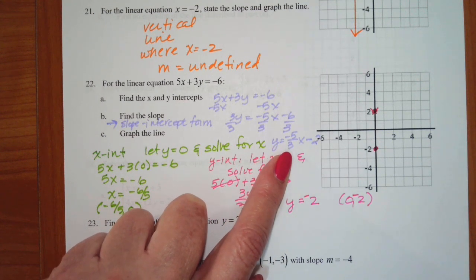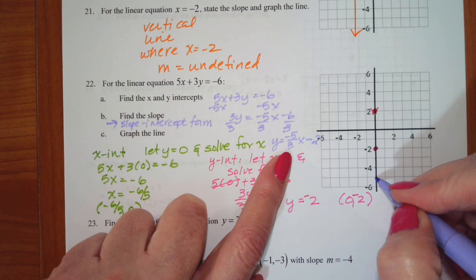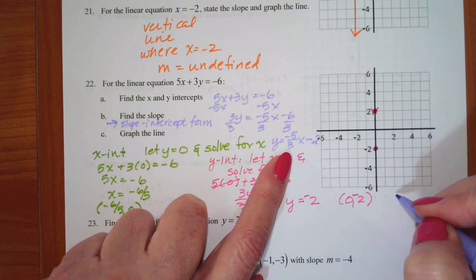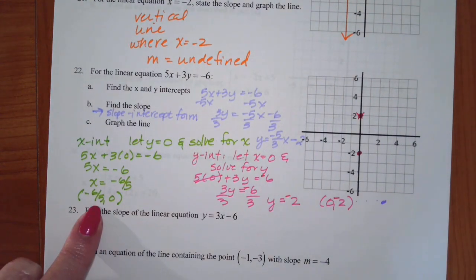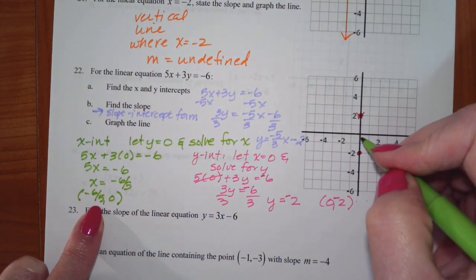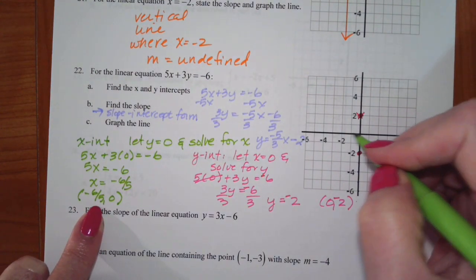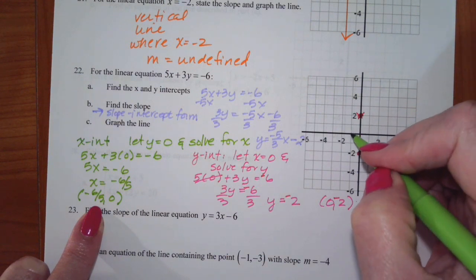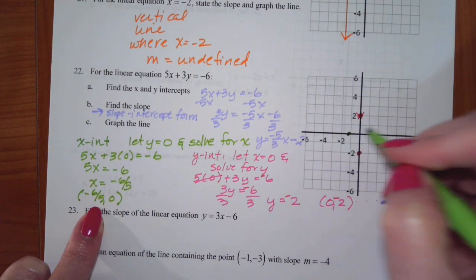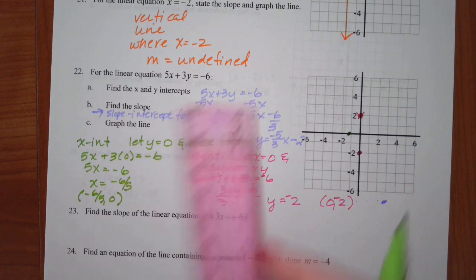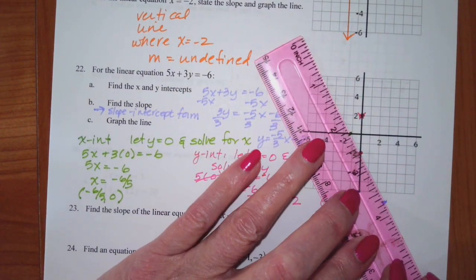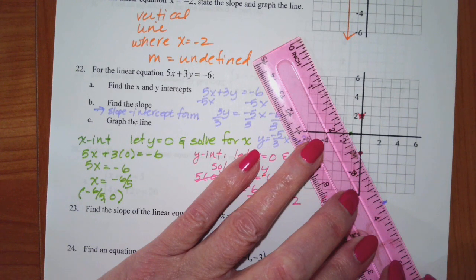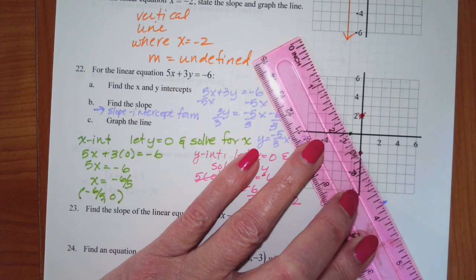So I go down 1, 2, 3, 4, 5 and to the right 3, then connect the dots. The line should cross the x-axis somewhere around negative 6 fifths. And it does — there you have it.